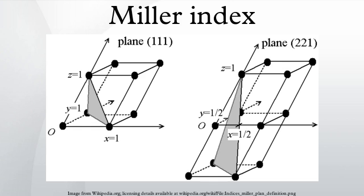denotes a direction in the basis of the direct lattice vectors instead of the reciprocal lattice. Similarly, the notation with angle brackets denotes the set of all directions that are equivalent by symmetry.